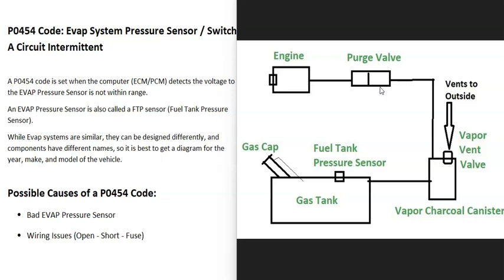The gas vapors leave the charcoal canister and go up to the engine compartment to what's called the purge valve, located around the engine. It stays closed when the engine's not running, but when the engine is running, the computer sends it a signal to open and the gas vapors go into the engine to be burnt away. Located inside the EVAP system is the fuel tank pressure sensor, reporting back to the computer what's going on inside the system.